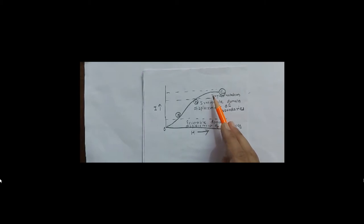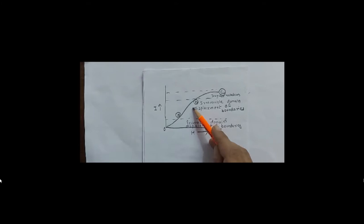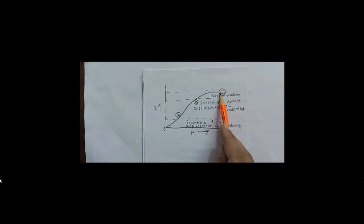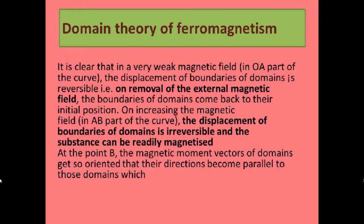As we cross point B, domain rotation starts — the domains begin rotating in the direction of the external field. From A to B, the material undergoes irreversible domain displacement of boundaries. From B to C, domain rotation occurs, and the domains rotate completely in the direction of the external magnetic field.